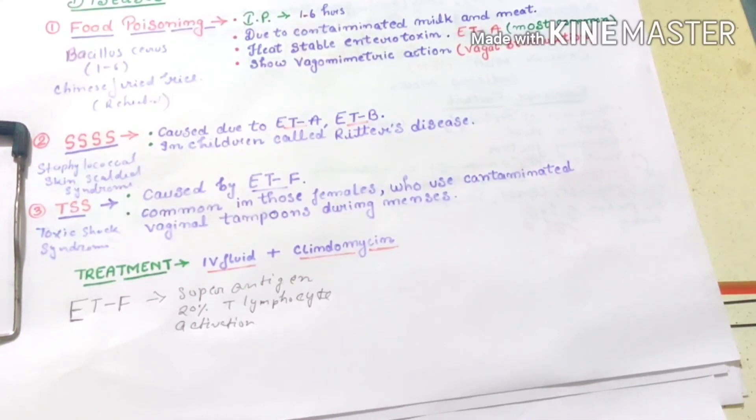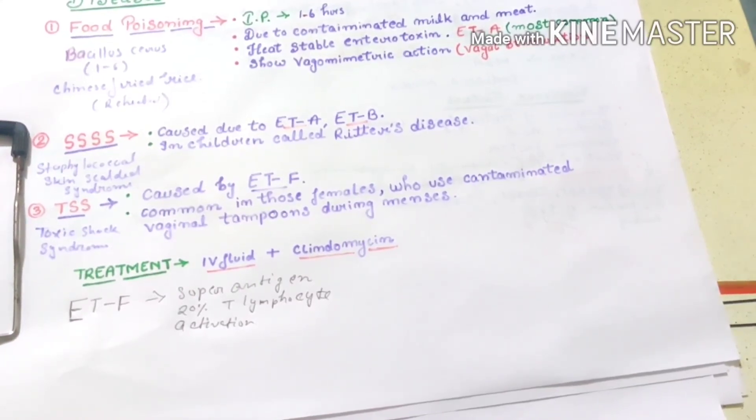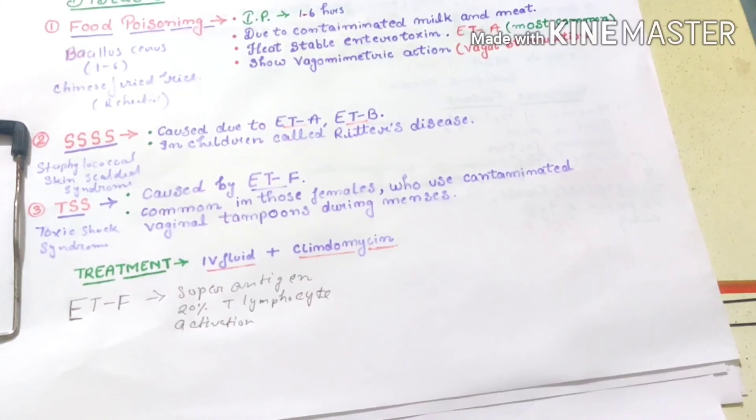20% T lymphocyte activation releases massive lymphokines, which results in shock. For this shock, treatment is IV fluid plus clindamycin. We recommend this medicine, clindamycin. It is an antibiotic, but in this case clindamycin acts as anti-toxic, not antibiotic.